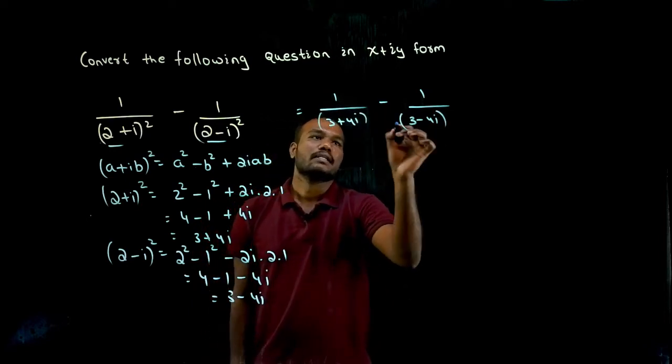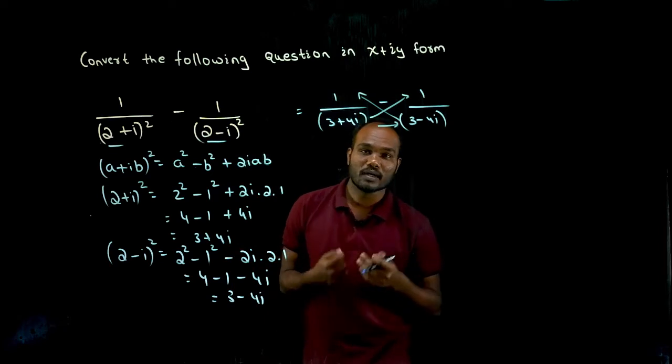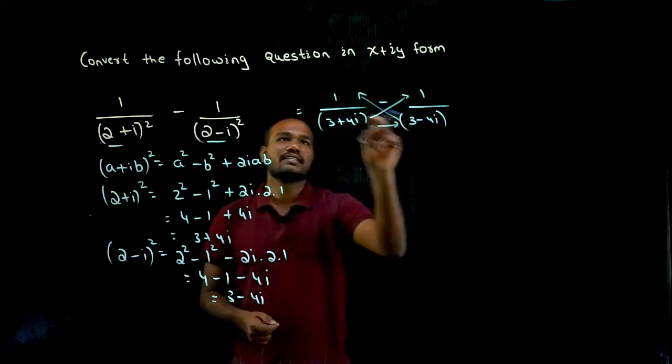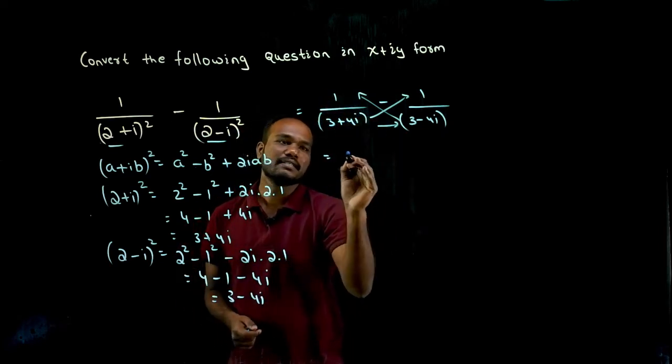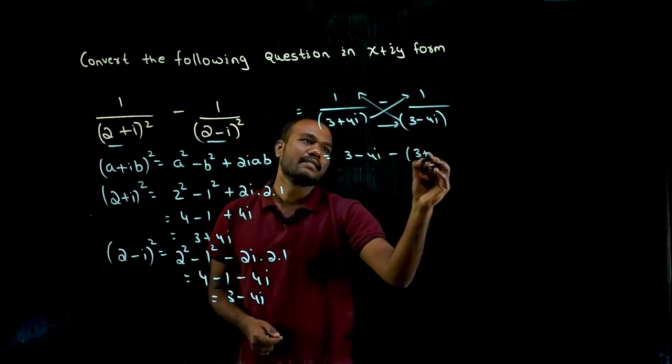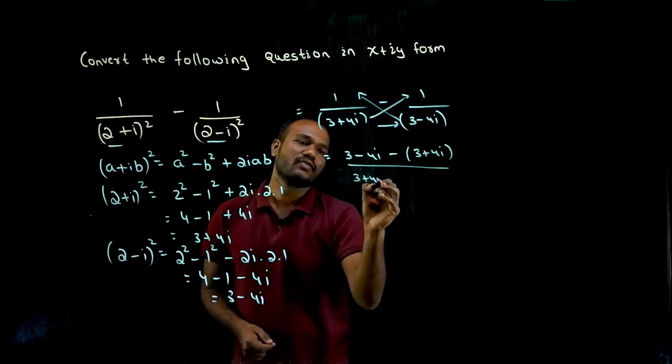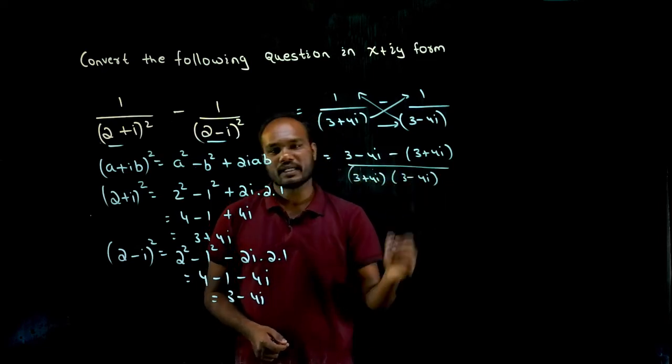Now, this number into this number, this number into this number, this number into this number. This is how the LCM is made. So 1 into anything is anything. So 3 minus 4i minus 1 into anything is again anything divided by this into this. That is 3 plus 4i times 3 minus 4i.